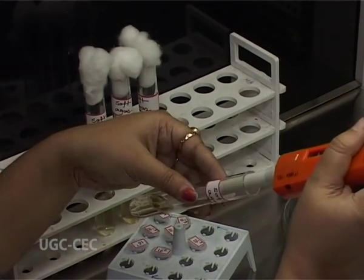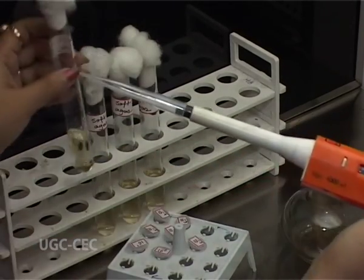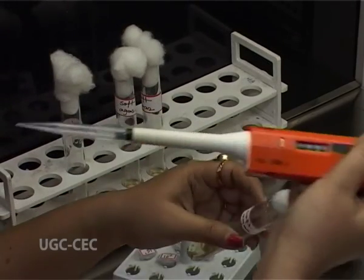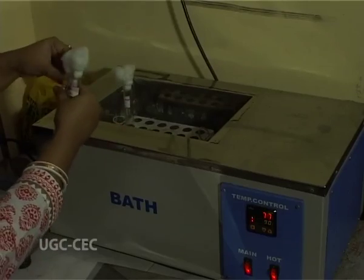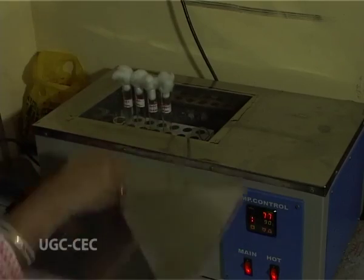After 15 minutes, take 100 µl of the phage-host mixture from each tube and add it to 5 ml of tryptone soft agar. Soft agar has a lower percentage of agar — normally 0.8%. Mix between the palms for 2 to 3 seconds. Maintain soft agar temperature around 42°C — it should not exceed 45°C or go below 40°C. Above 45°C the host cells may die; below 40°C the soft agar solidifies. Keep it in a water bath at 42°C.